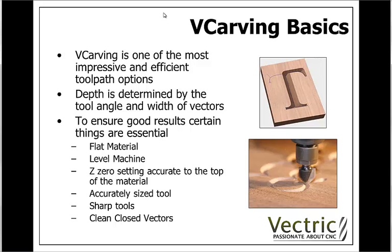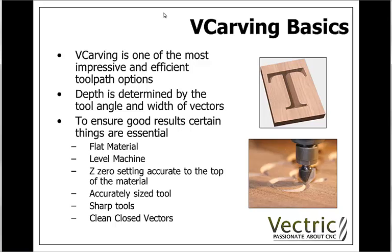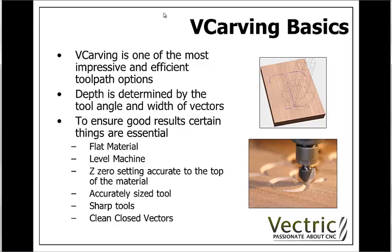The vectors need to be closed so that the software knows the area within which you want to v-carve. It won't actually accept open vectors for v-carving and it would give you a warning about that if you tried to use them. In addition to that you need to try and avoid these vectors being overlapping. If they're overlapping then it's not clear to the software which area it is that you're trying to v-carve within. If you do have a design that has overlapping vectors, then you can machine it in multiple v-carve toolpaths.